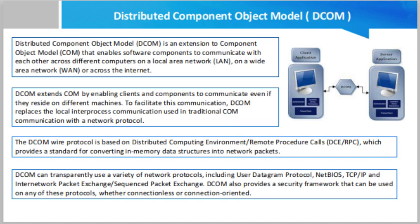DCOM enables communication in a similar fashion to the way COM components communicate among themselves on a single machine. DCOM client objects make requests for services from DCOM server objects on different machines on the network using a standard set of interfaces. The client object cannot call the server object directly; instead, the operating system intercepts the DCOM request and uses inter-process communication mechanisms such as remote procedure calls to provide transparent communication between the client and server objects.